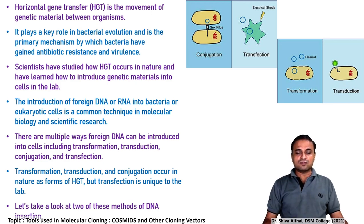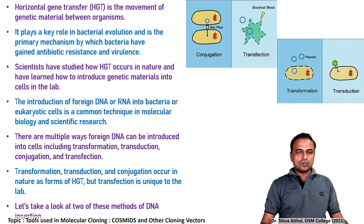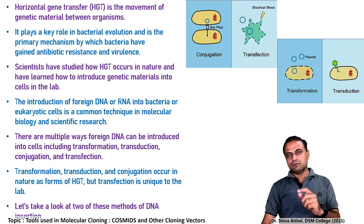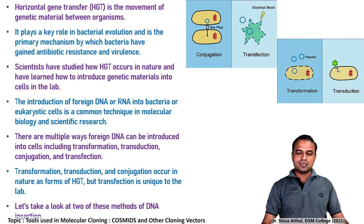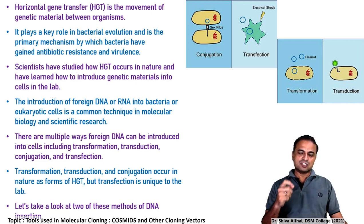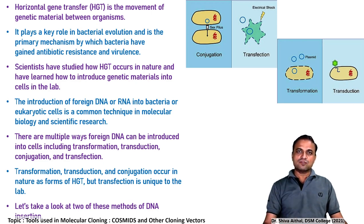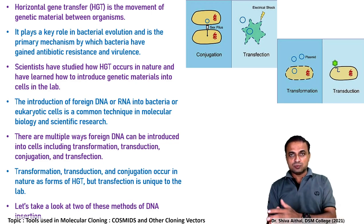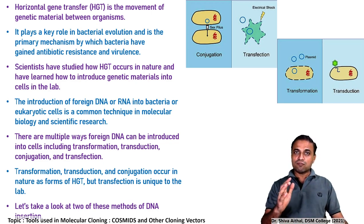Horizontal gene transfer is the movement of genetic material between organisms. It plays a very important role in evolution and is one of the prime mechanisms by which bacteria have acquired various features like antibiotic resistance and resistance to virulence. This particular method of horizontal gene transfer — occurring naturally in the form of conjugation, transformation, and transduction — has been artificially brought in the form of transfection by scientists.